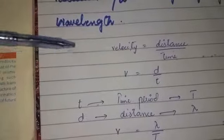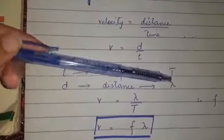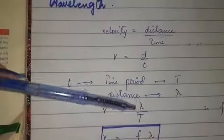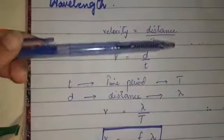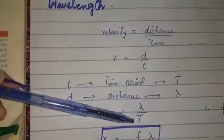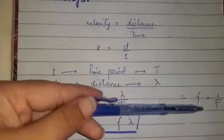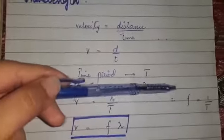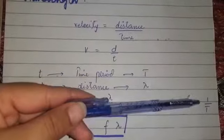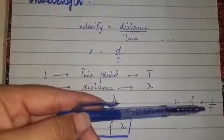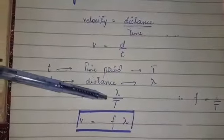We know how the wave is produced with crests and troughs. The wavelength is the distance and the time is the time period, so velocity equals wavelength over time period. We know frequency f is equal to 1 over t.